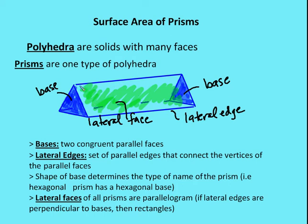Then there is a set of lateral edges — a lateral edge here, a lateral edge here, and a lateral edge here. There are also base edges that correspond to the edges of the base. The lateral edges are parallel edges that connect the vertices of the parallel faces. The shape of the base determines the name of the prism.